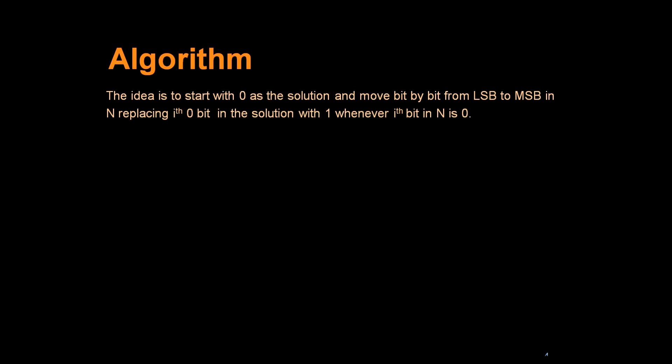If ith bit in N is 1, we do not have to do anything as the default value of solution is 0 in which all its bits are 0. Let's take one example.